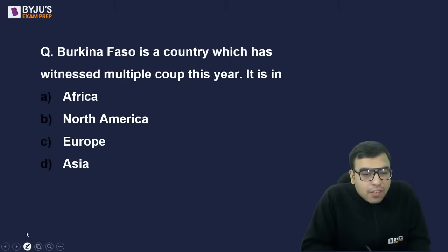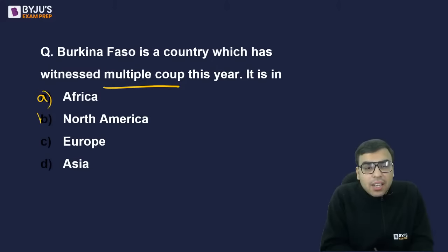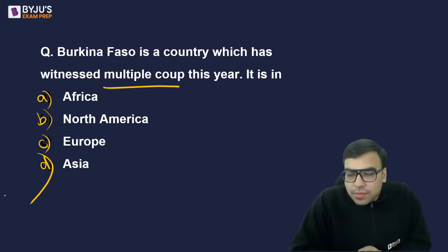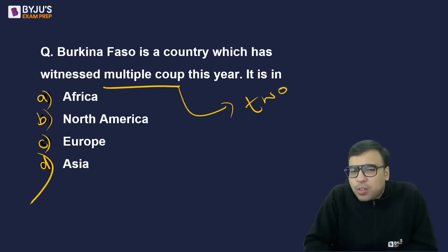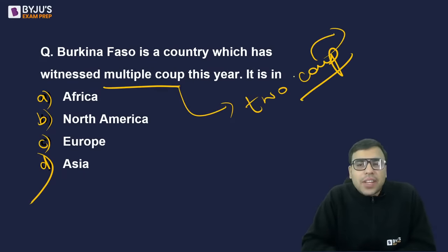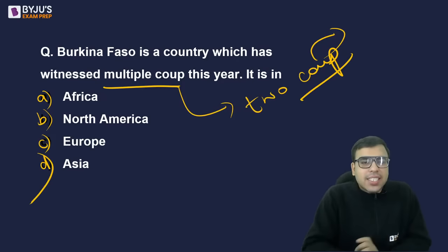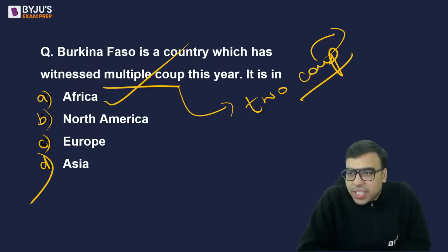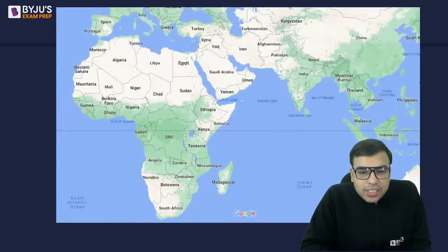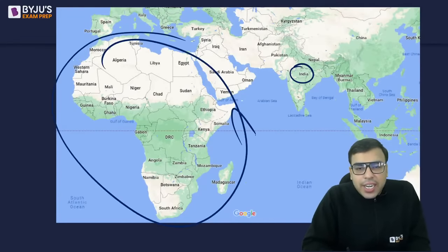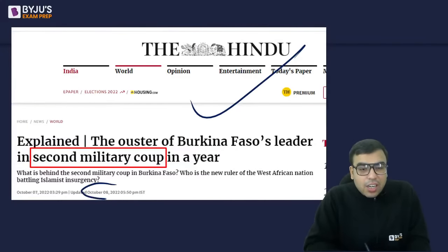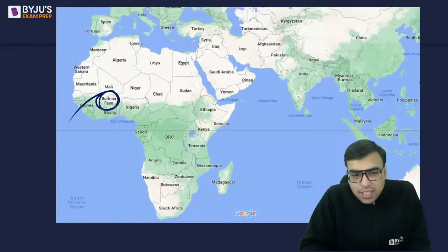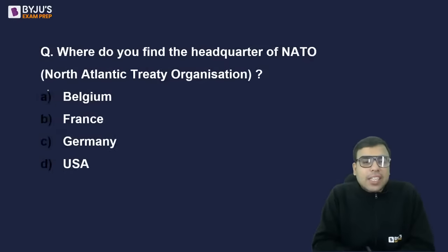Burkina Faso is a country which has witnessed multiple coups this year. It is in Africa, North America, Europe, or Asia? The right answer is A — Africa, specifically West Africa. A coup means the overthrow of a democratic government by the military. Burkina Faso witnessed a second military coup on 8th October this year. These types of current affairs questions are asked in exams.